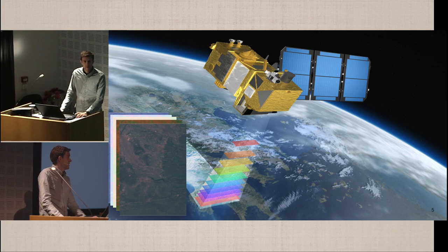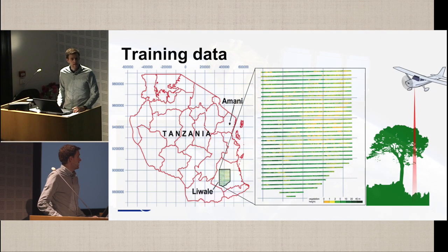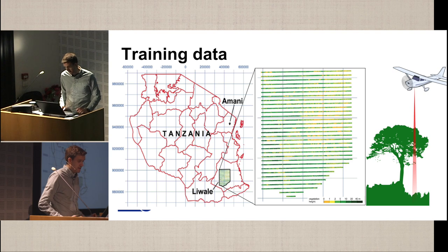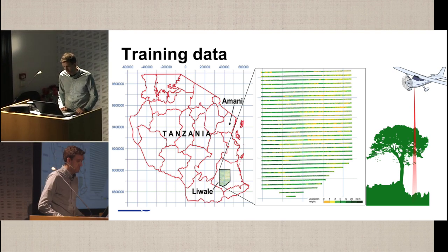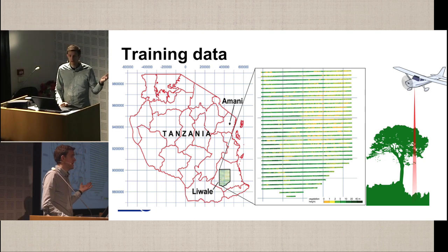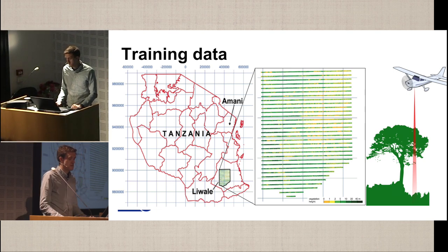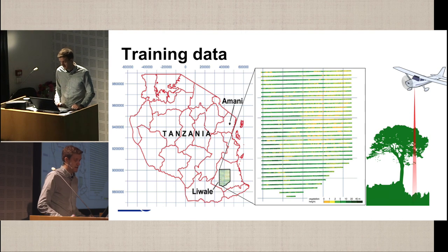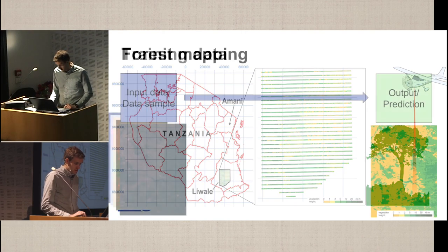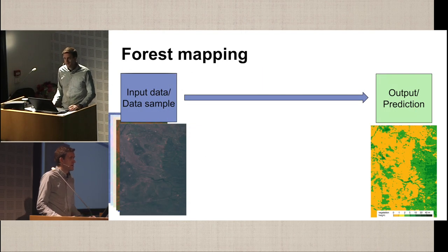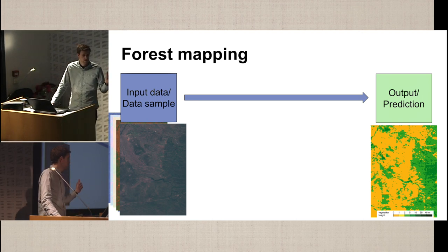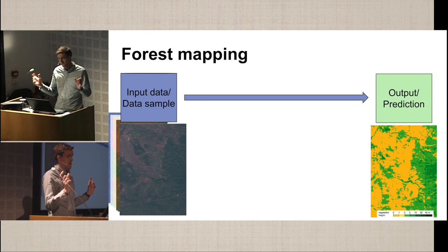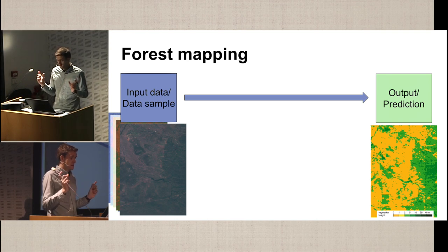The ground truth data was collected using LiDAR scanning. We had data from Tanzania in a small region called Livale, where we had a tree height map recorded using laser scanning. That formed the machine learning setup: satellite images on one side, and we wanted to produce tree height maps on the other side.